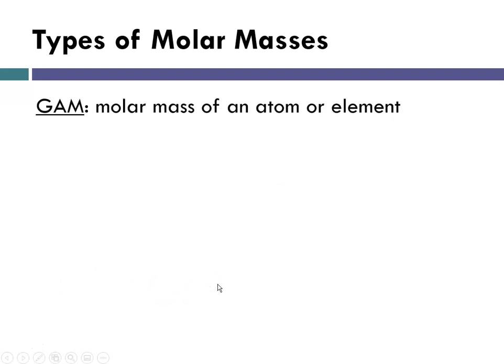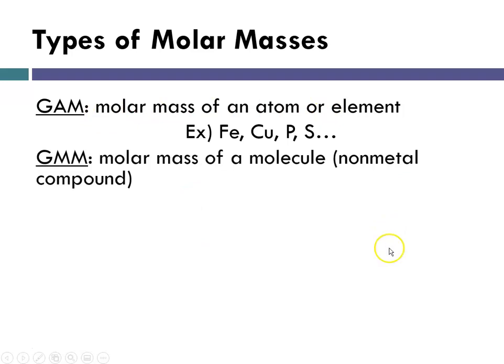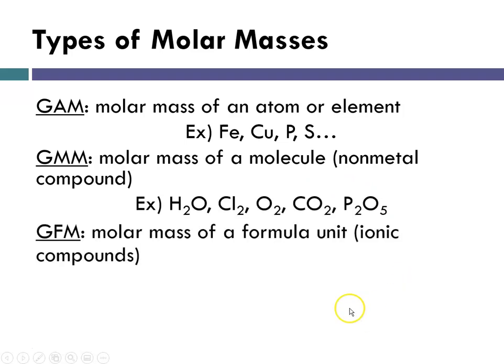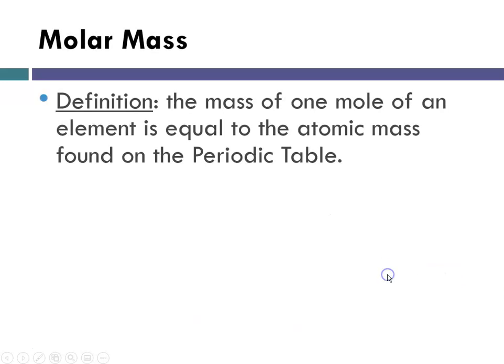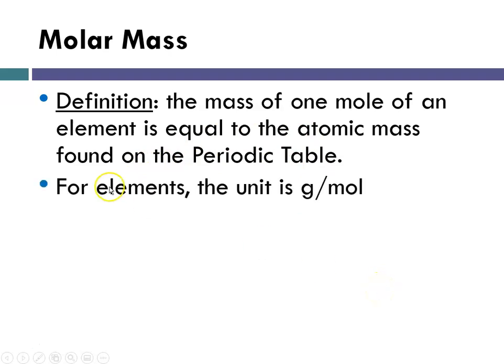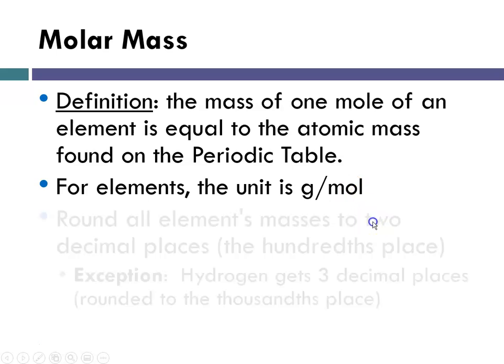So types of molar masses. Gram atomic mass is the molar mass of an atom or element. Gram molecular mass is the molar mass of a molecule, which is nonmetallic compounds. And the gram formula mass would be the molar mass for ionic compounds, metal, nonmetal compounds. And again, examples there. So molar mass is the mass that gives you one mole of an element. And it's equal to the atomic mass found on the periodic table. So for elements, the unit is grams per mole.